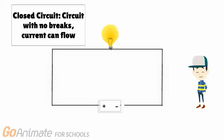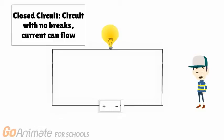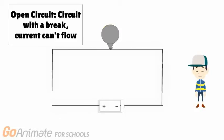Let's use a light bulb as an example. This light bulb is able to glow because it is connected to a closed circuit. A closed circuit is a circuit without breaks, allowing current to flow. An open circuit has a break which stops the current from flowing. The light bulb will not turn on.